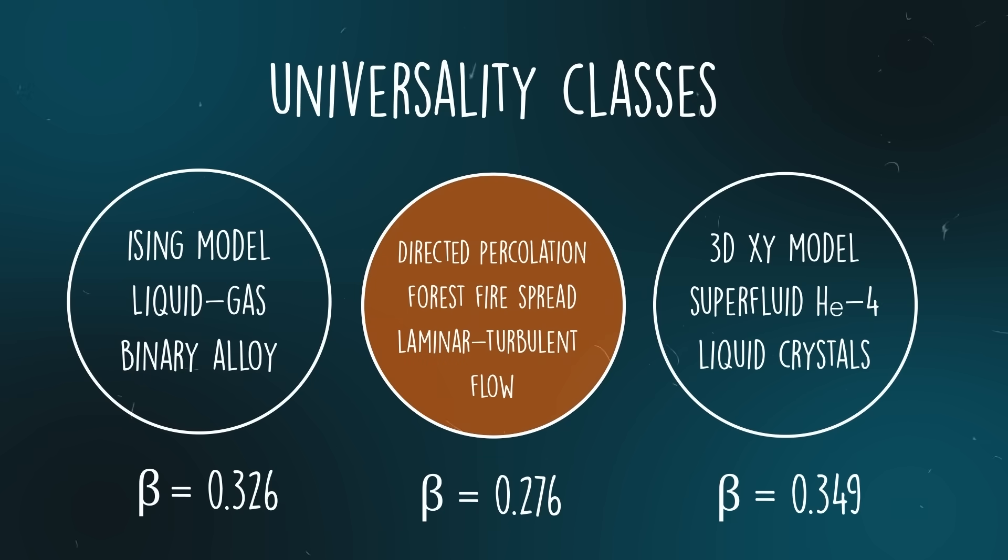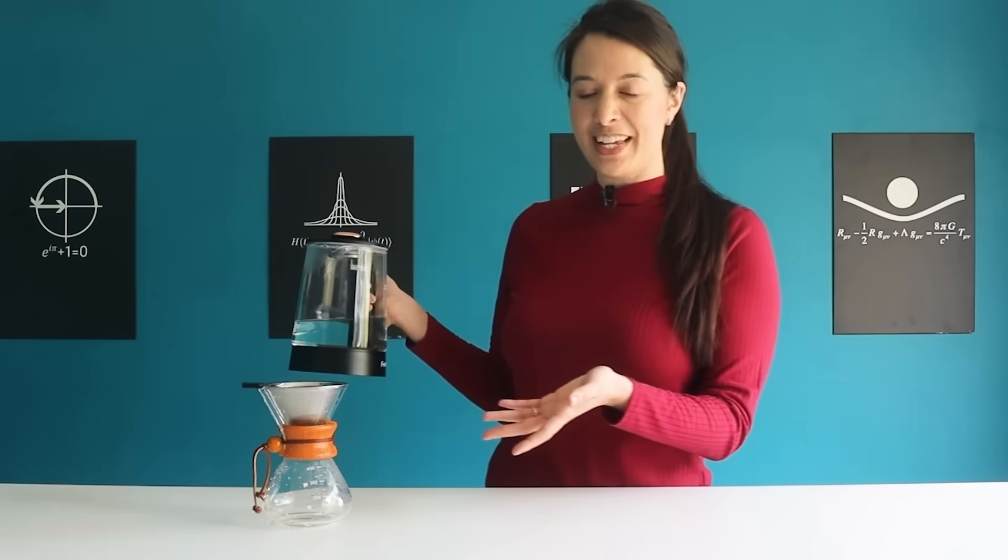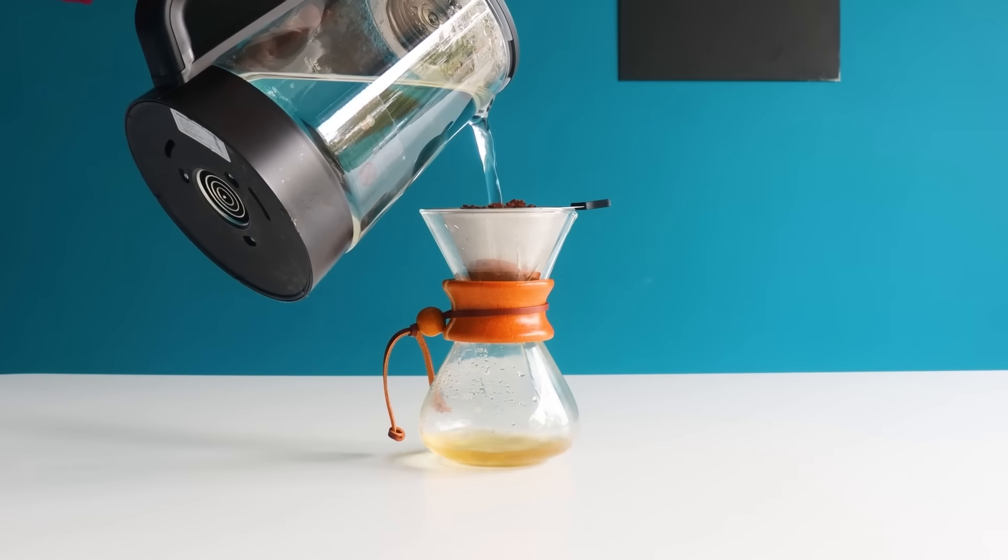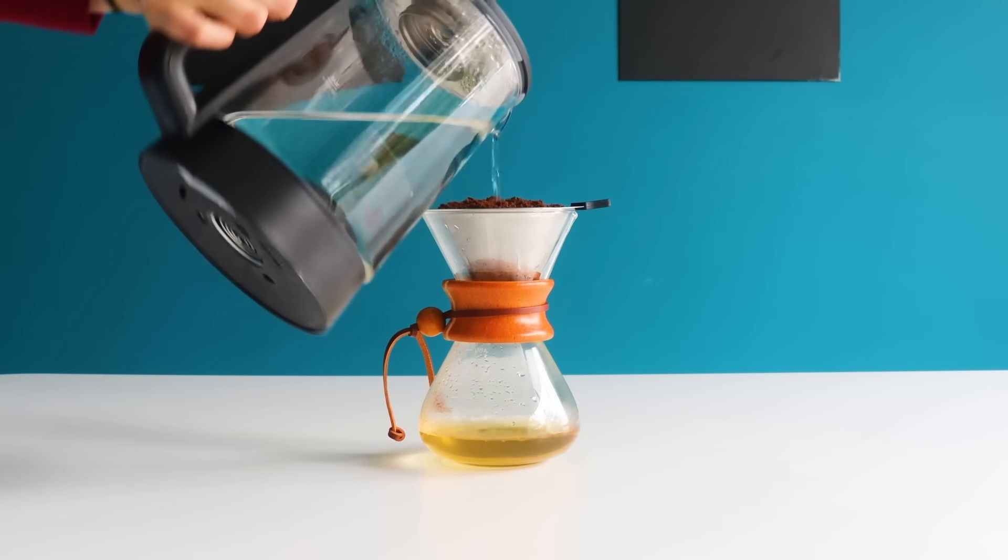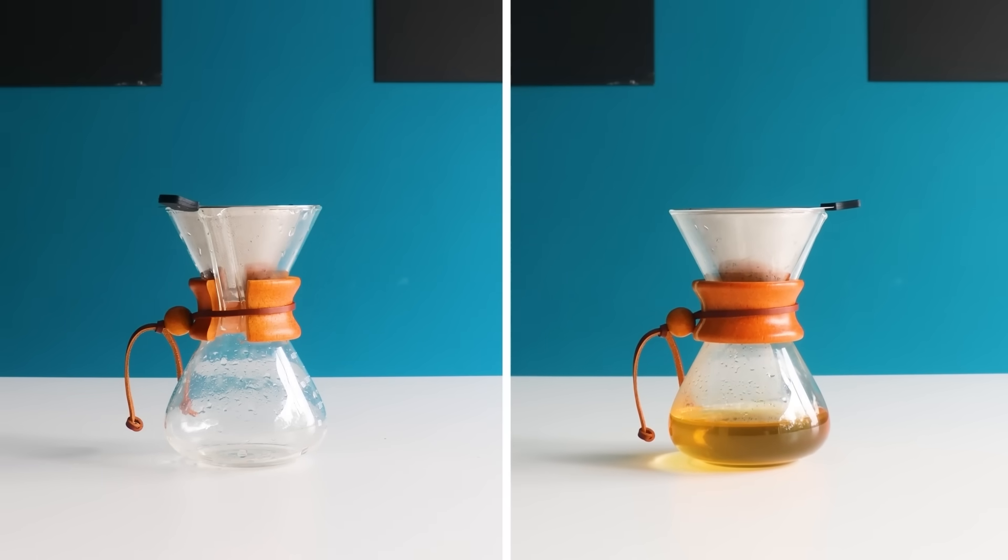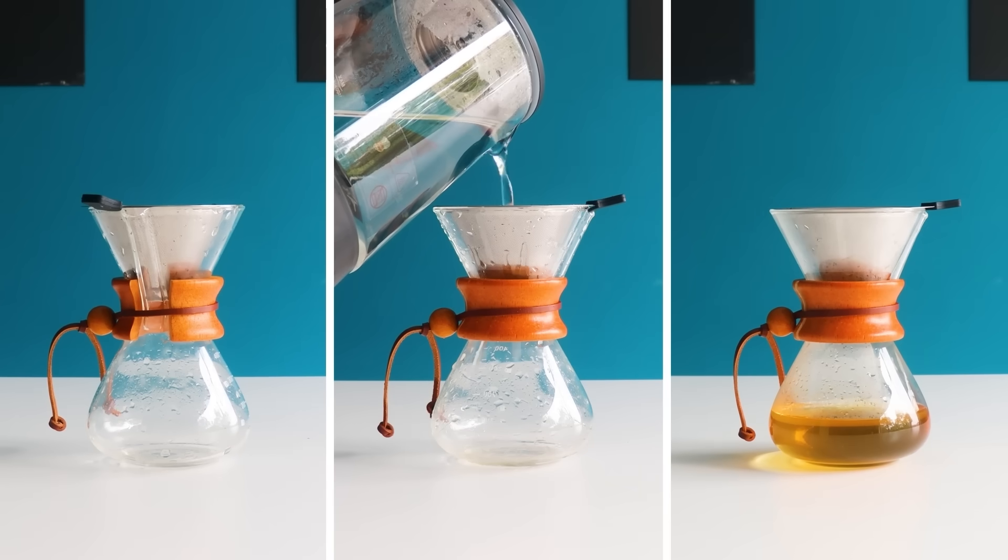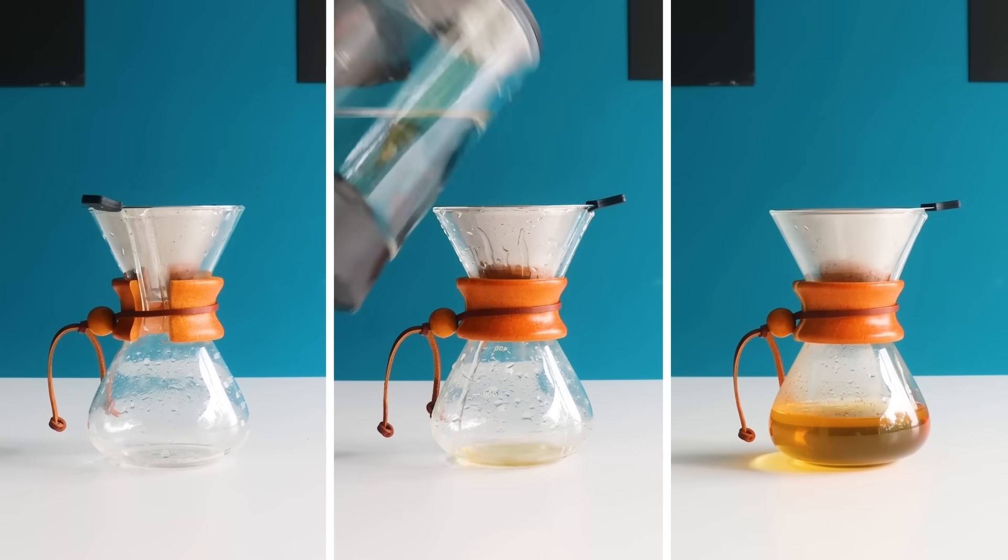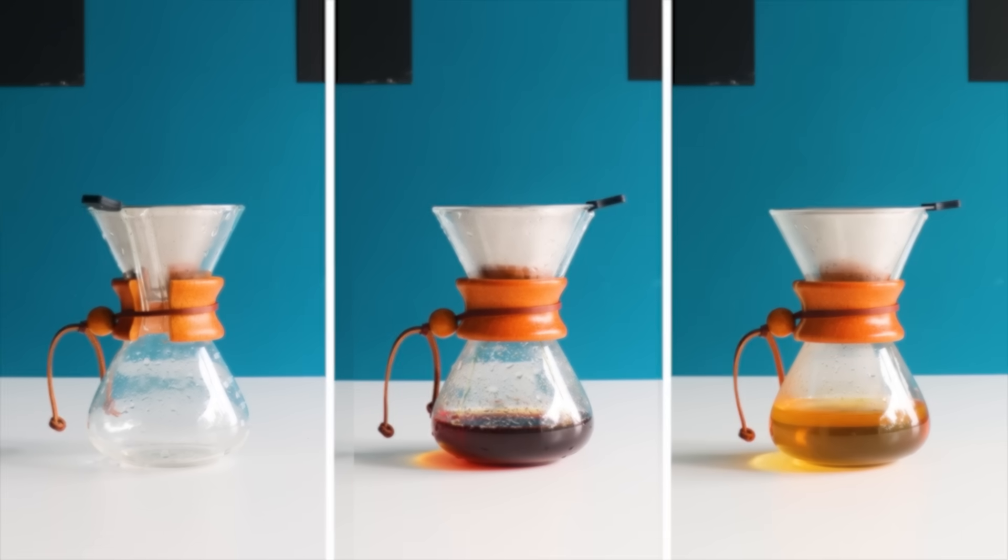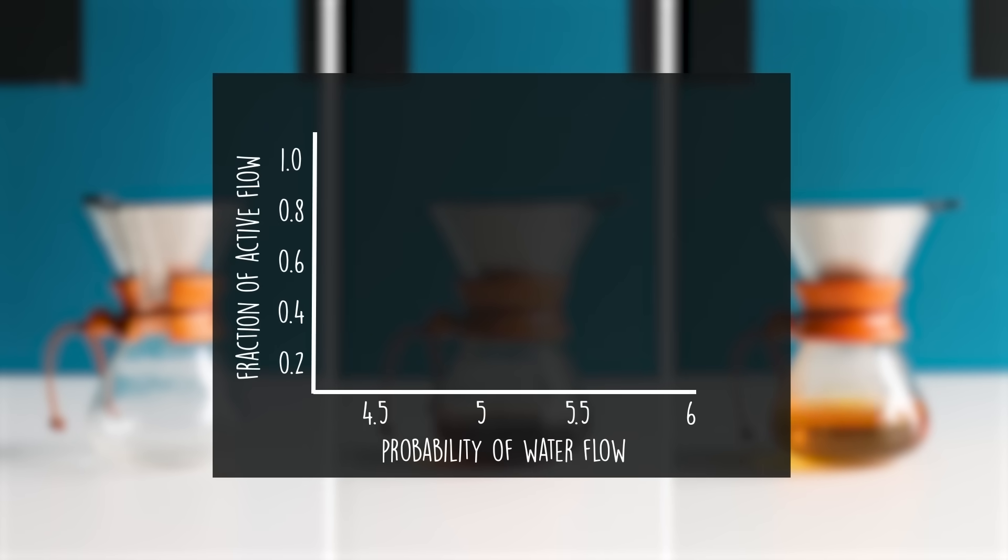Another universality class is the directed percolation class. Take drip coffee. You pour hot water over the coffee grounds to extract the flavor from them. If you pack the grounds too loosely, your coffee won't have much flavor. If you pack them too tightly, no water will get through. There's a sweet spot in the grounds density where you'll get the most flavor out of the coffee grounds. Here there's a phase where water can flow and a phase where it can't flow. This phenomenon is called directed percolation, and it's modeled with a power law. The critical exponent that describes where the water starts flowing is 0.276.